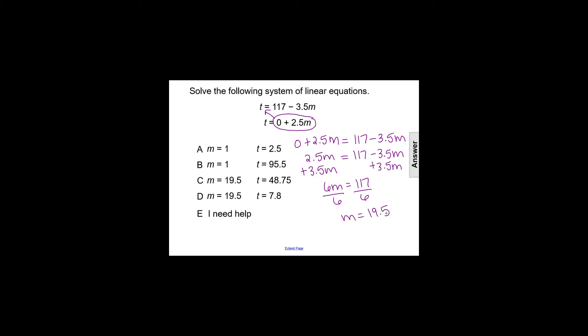We can then take that value of m and substitute it into either of the original system's equations to solve for t. I'll choose the second equation since it has a plus 0 value. We're just doing t equals 0 plus 2.5m, or just 2.5m,